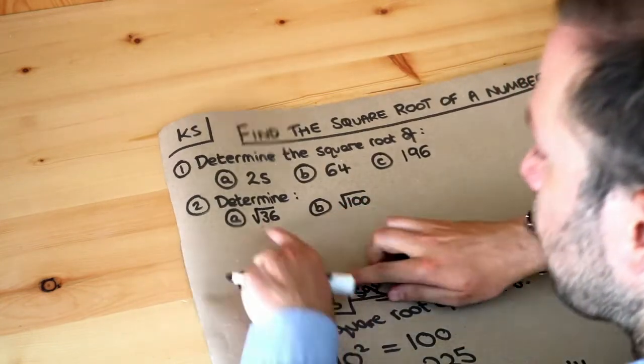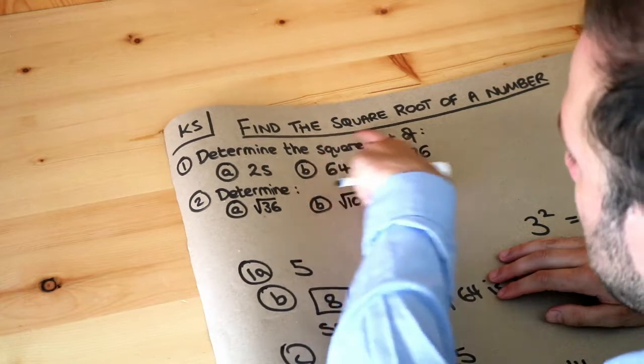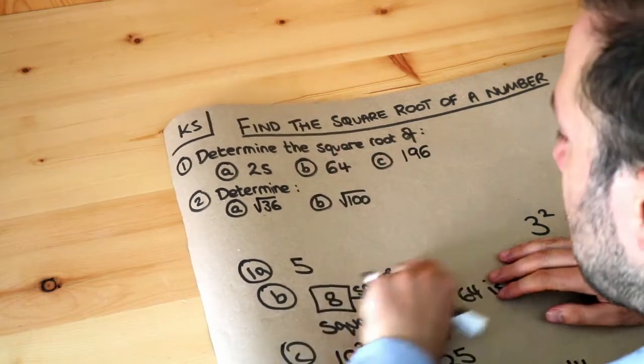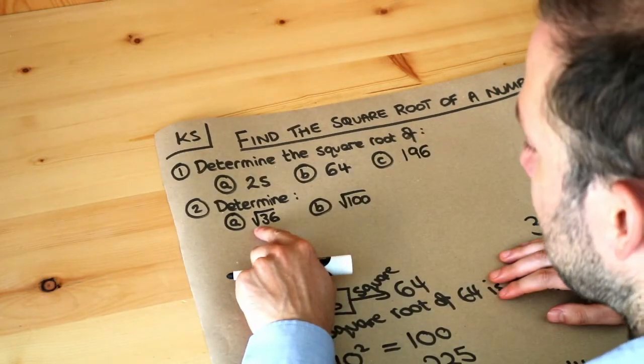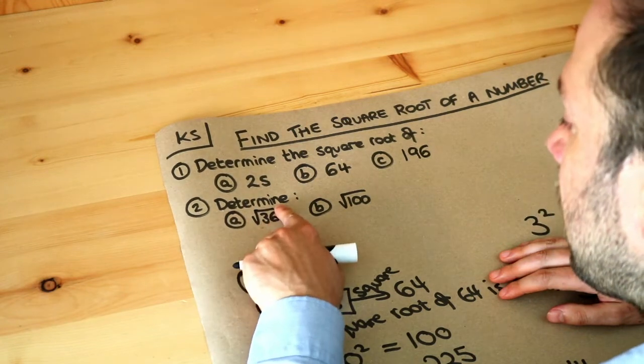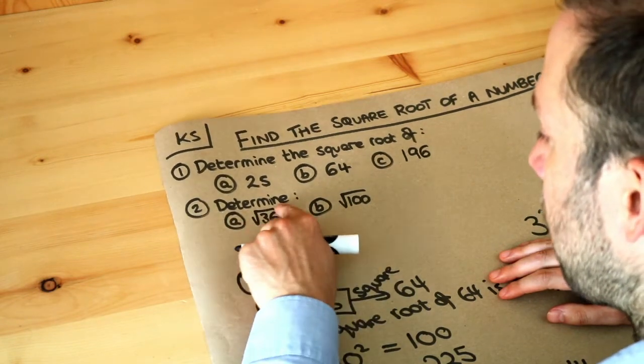Now this is what the square root symbol is. Now I've described it in words here, the square root of in words. But you can also write it with mathematical notation. So that means, the square root symbol, we want the square root of 36.